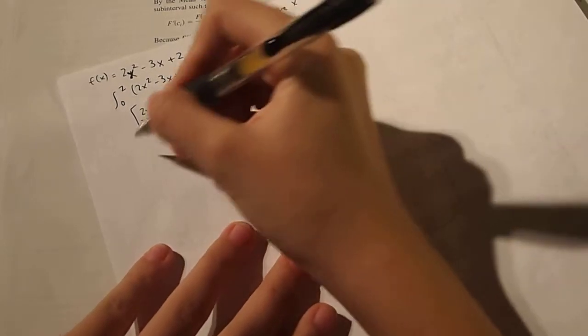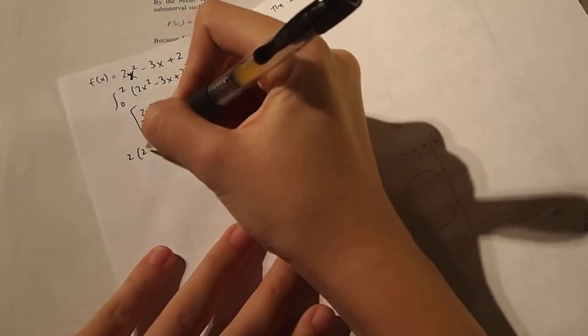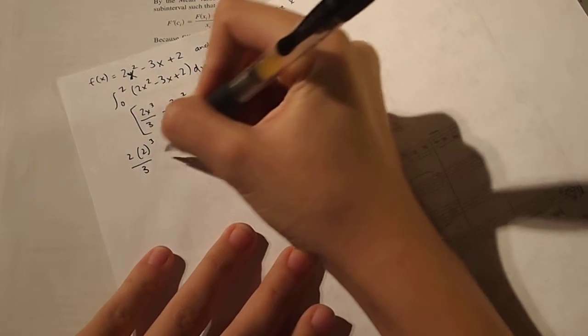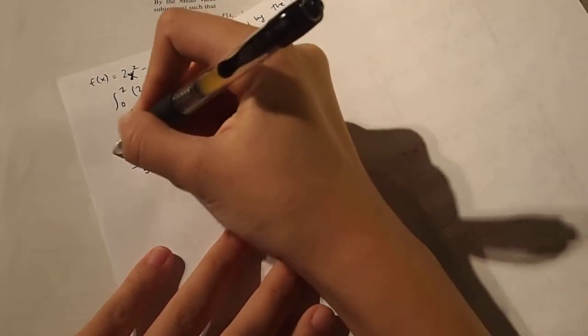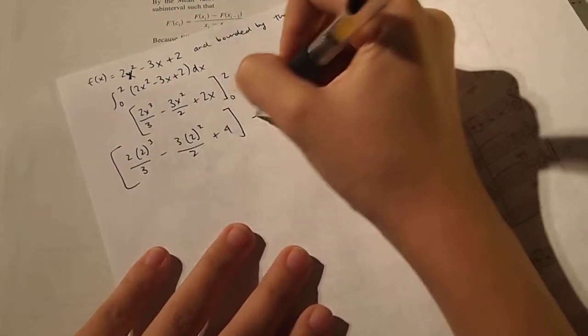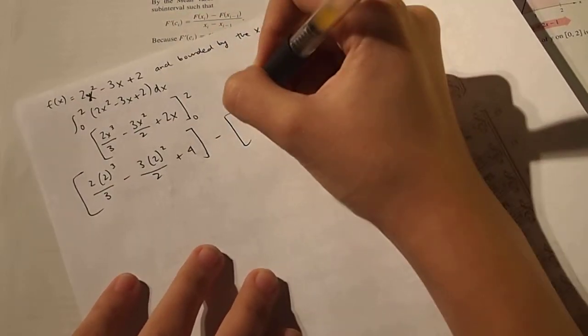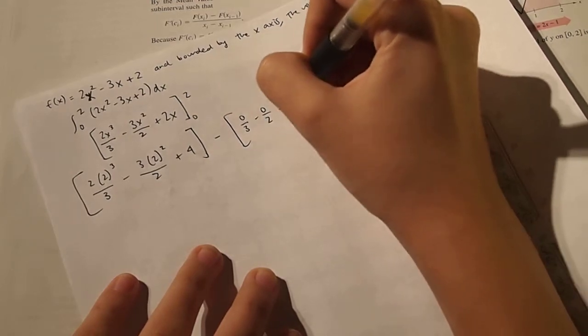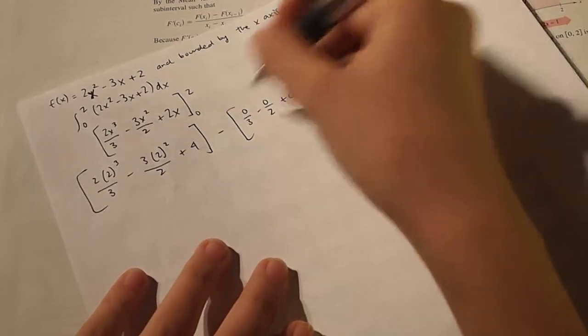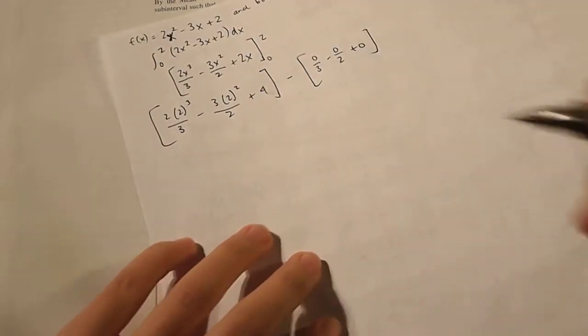And then we need to solve this for 0 and 2. So remember, it's top minus bottom. So 2 to the third over 3 minus 3 times 2 squared over 2 plus 4, all of this minus 0 over 3 minus 0 over 2 plus 0. So this is just 0, so we just need to solve for this left side.